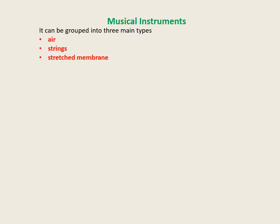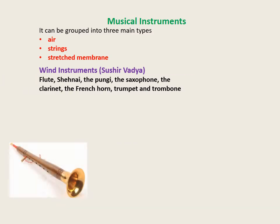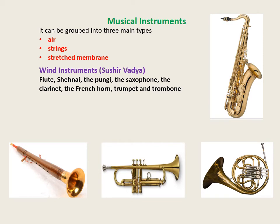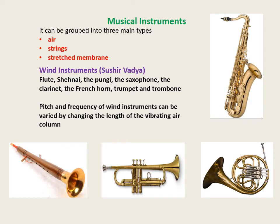Musical instruments can be grouped into three main types depending on what vibrates while playing: air, strings, or stretched membrane. Wind instruments such as the flute, the shehnai, the pungi, the snake charmer's flute, the saxophone, the clarinet, the French horn, the trumpet, and the trombone produce sound by vibrating an air column inside the instrument. The pitch and frequency of wind instruments can be varied by changing the length of the vibrating air column.